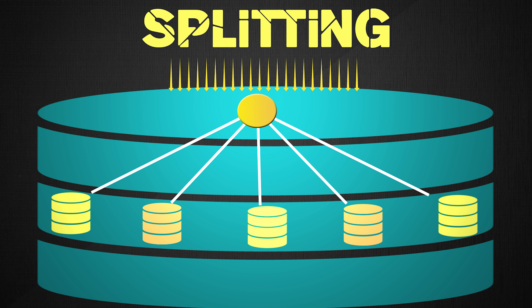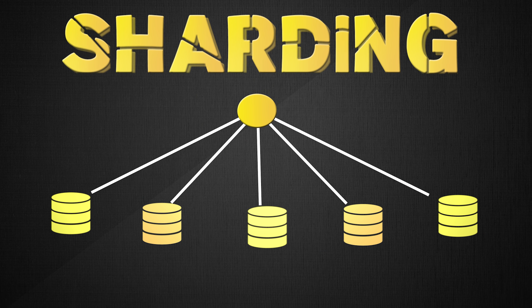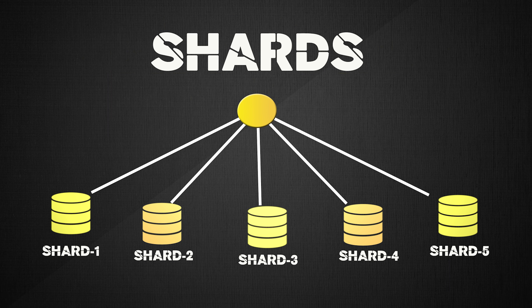This idea of splitting up or horizontally partitioning the data is known as sharding. You split up the main database into a bunch of little databases, which are known as shards or data partitions. By doing this, you have not only increased the throughput but also avoided duplication of so much data.